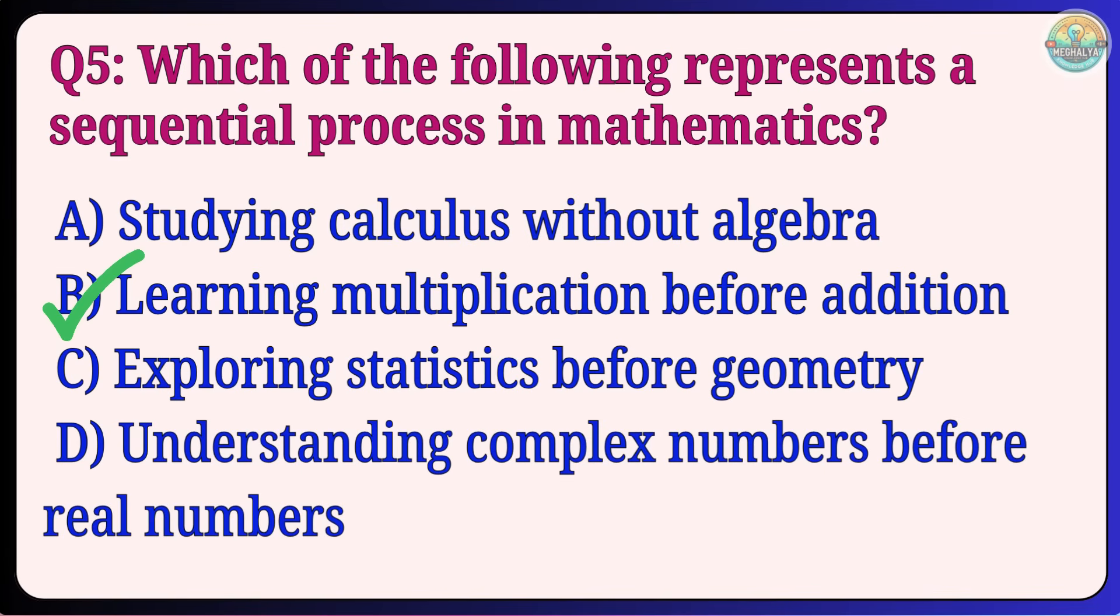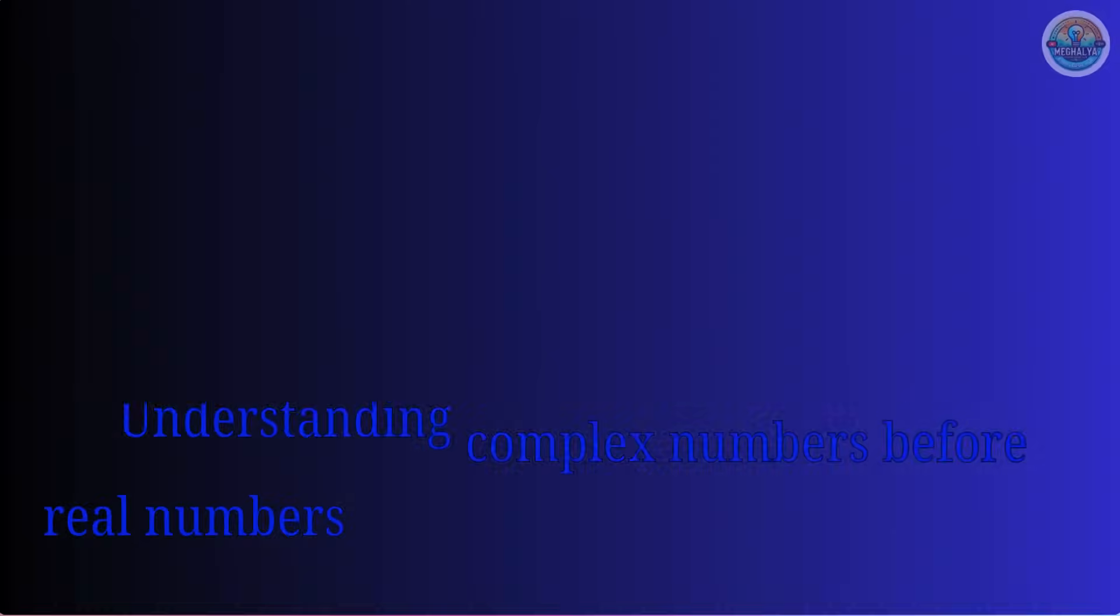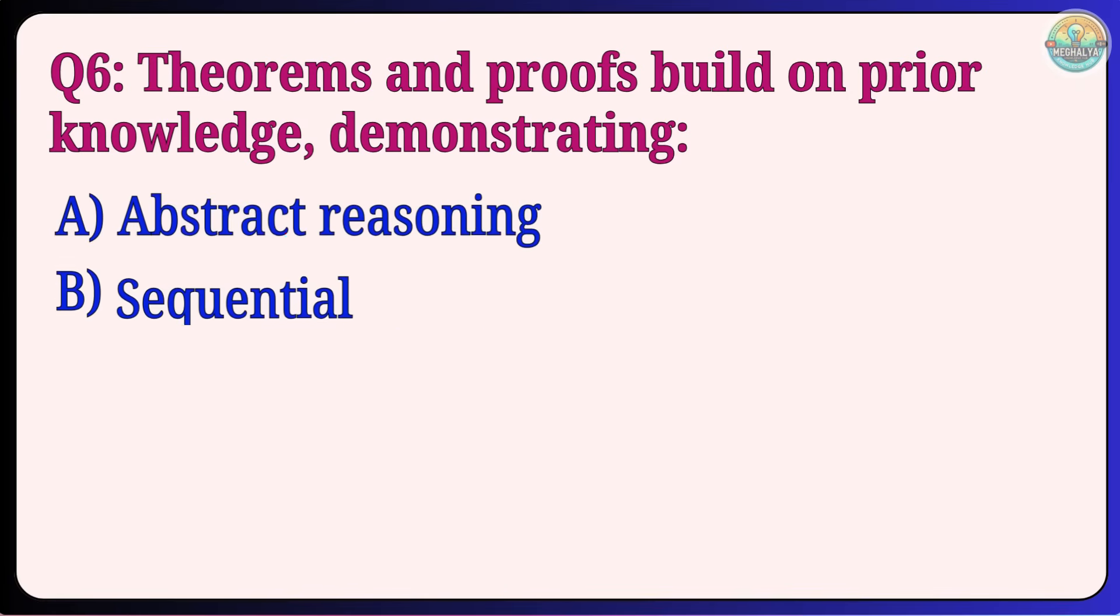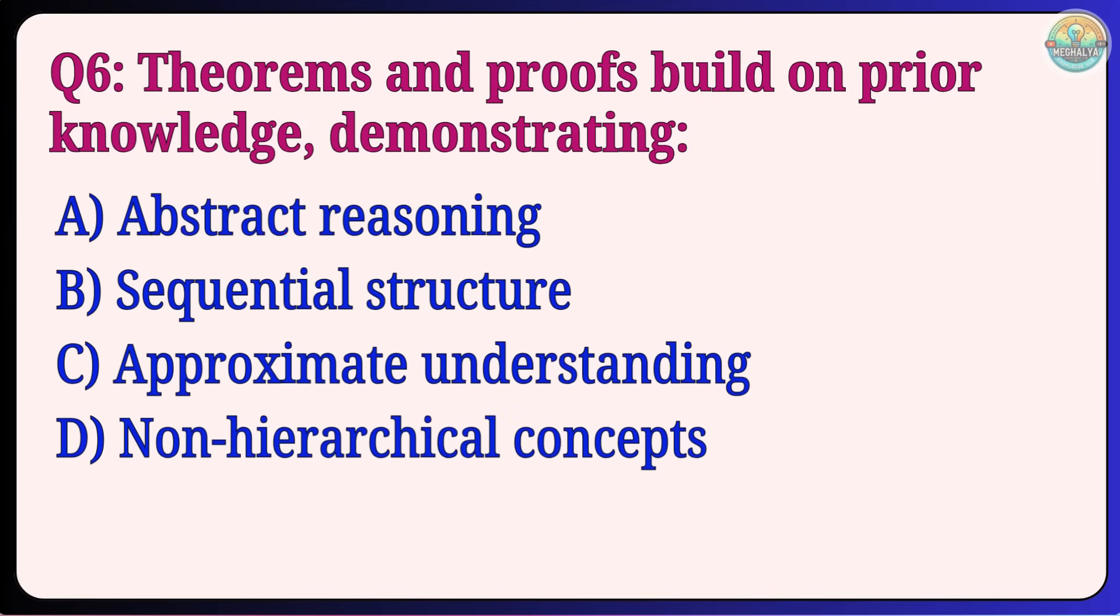Question 6: Theorems and proofs build on prior knowledge, Demonstrating Abstract reasoning, Sequential structure, Approximate understanding, Non-hierarchical concepts. Answer: B, Sequential structure.